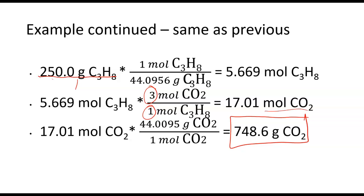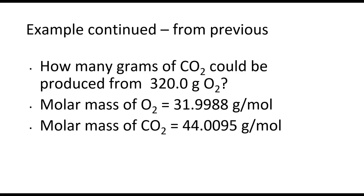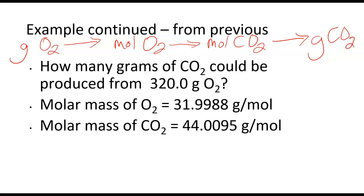Now let's figure out whether that's gonna be what we actually produced. So we want to take a look at how much we could make from the O2. So we're kind of splitting this problem into two problems. We want to figure out how much CO2 I could make from 320.0 grams of O2. It's the same type of problem. We're gonna take our grams of O2, convert that to our moles of O2, then moles of O2 to moles of CO2, and moles of CO2 to grams of CO2. If this is starting to look a little repetitive, that's good. That means you're starting to see the pattern here.